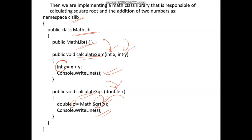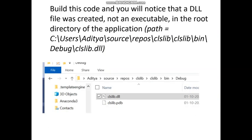Once the class library is created, you have to build the code. After building, one DLL file is created. To locate the DLL file, right-click on the project in Solution Explorer and choose 'Open Folder in File Explorer'. The DLL file is located under the project's bin folder, inside the debug subfolder. Inside this DLL, both functions — CalculateSum and CalculateSqrt — are present.